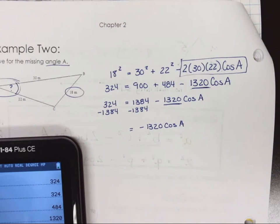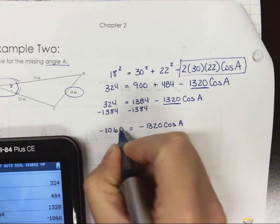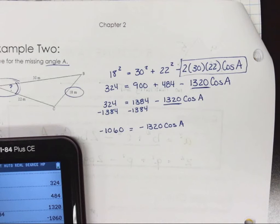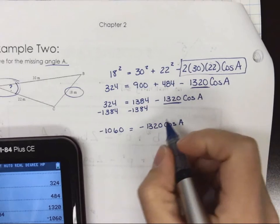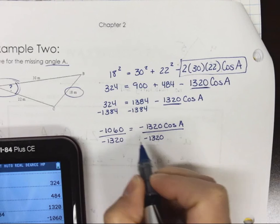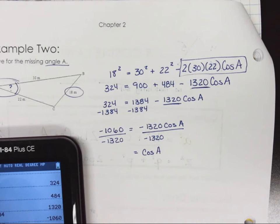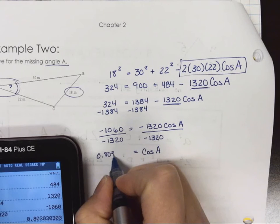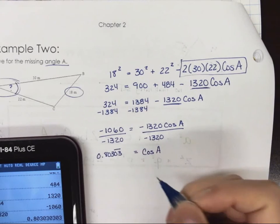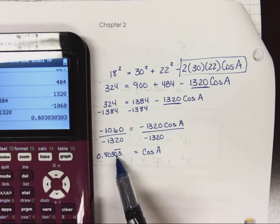I'm going to subtract 1384 from both sides. So now I'm left with negative 1320 times cos of A, and when I do the subtraction I'm going to be negative 1060 on this side. We got negative numbers, but it's not terrible. How do I get cos A by itself? I've got to divide out the negative 1320.